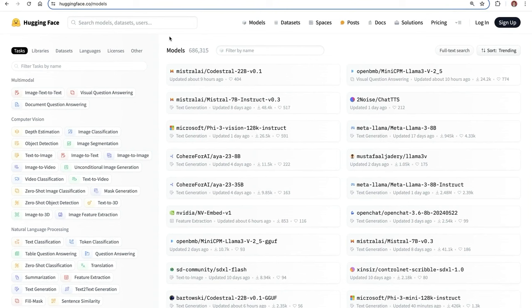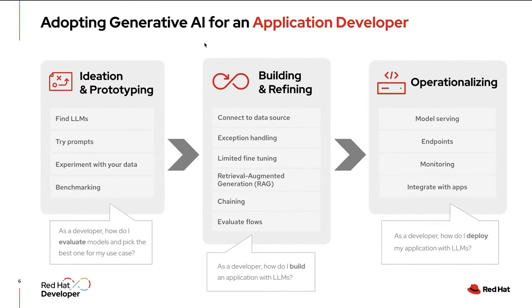Hugging Face has quite the collection of over half a million different open source models we can start using today. We'll talk about how to evaluate which model is right for your use case, but also the building and refining phase — taking a model and invoking and inferencing it to build an intelligent application. This covers connecting to data sources, working with RAG for organizational context, evaluating flows, and operationalizing generative AI: where to serve the model, how to connect to endpoints, handling authorization, and monitoring both the model and application.